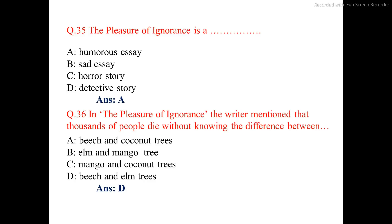Question number 36. In The Pleasure of Ignorance, the writer mentioned that thousands of people die without knowing the difference between — the correct option is option D: beach and elm trees.